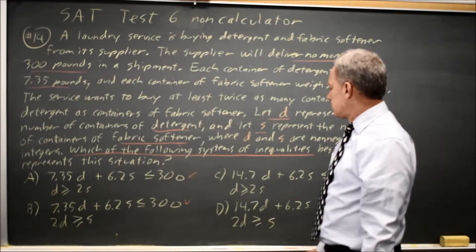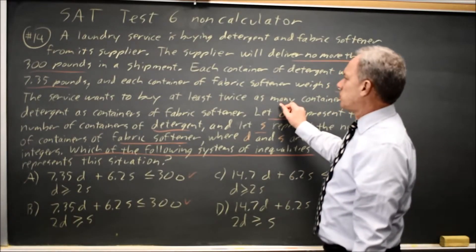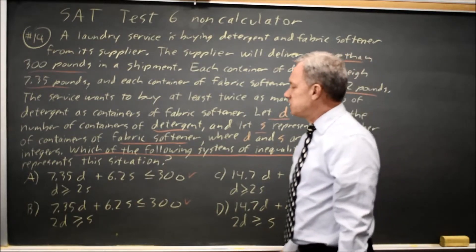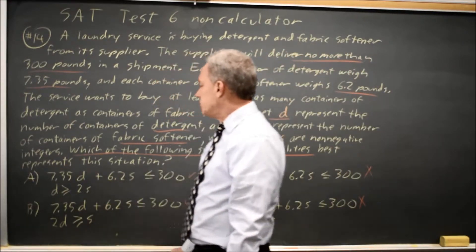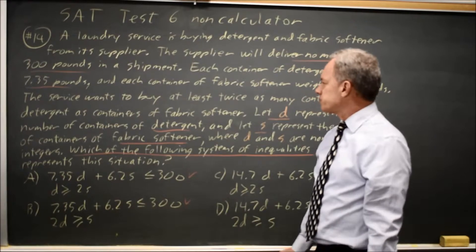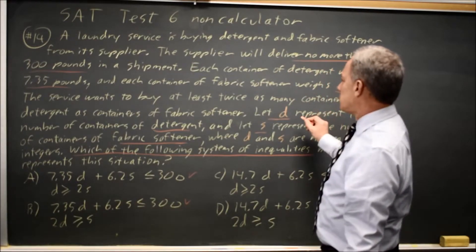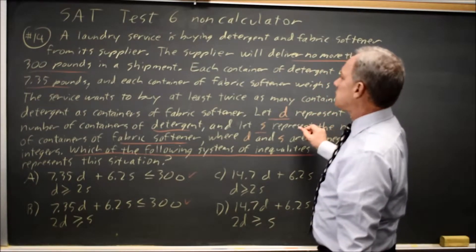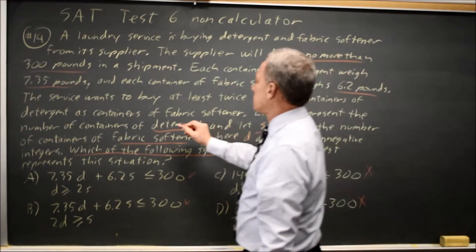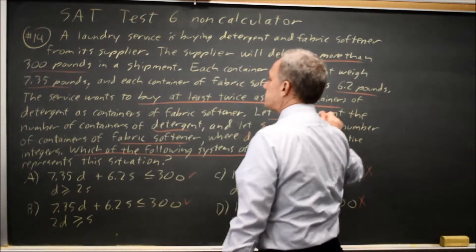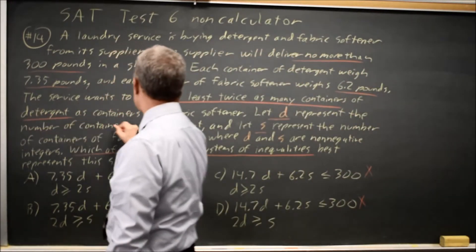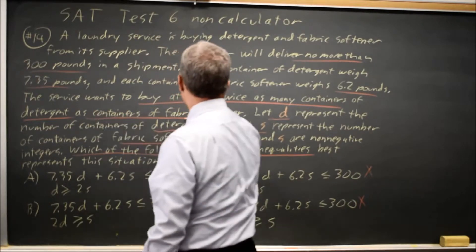Now let's look at this D greater than 2S or 2D greater than S. We're told that the service wants to buy at least twice as many containers of detergent as containers of fabric softener.